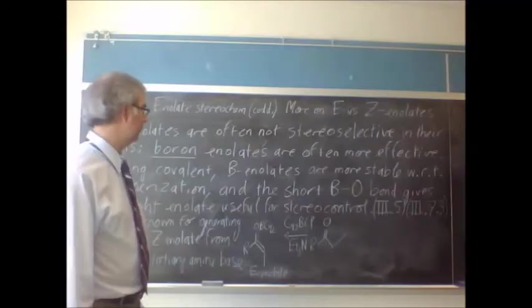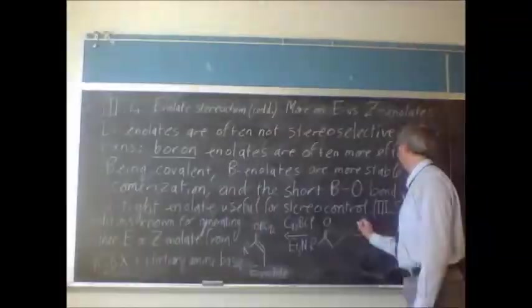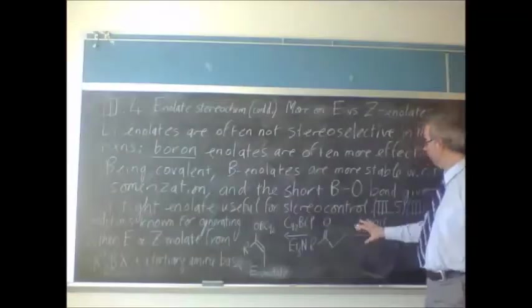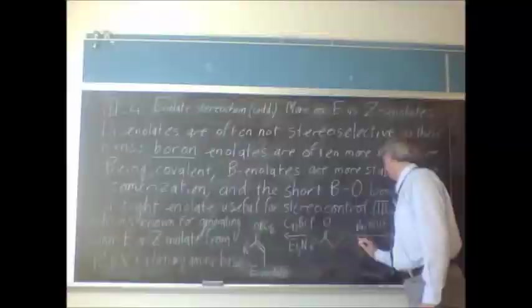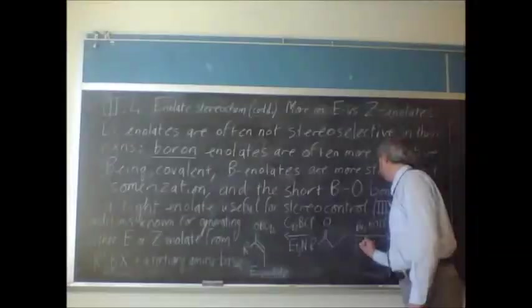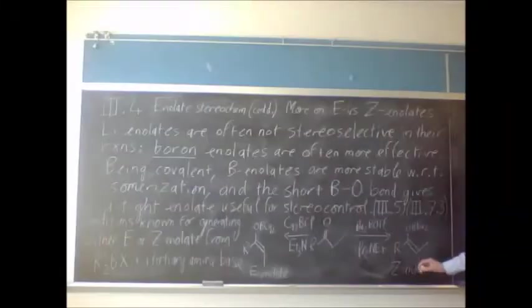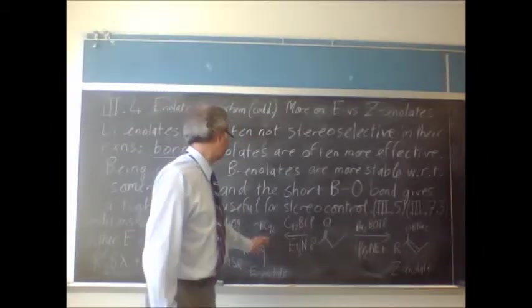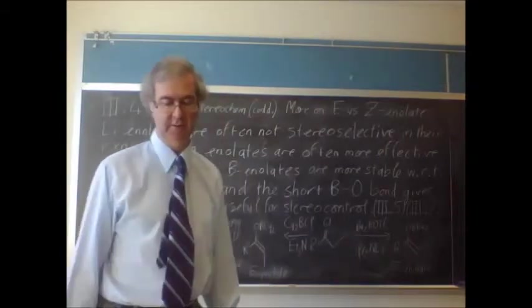But if we use a smaller R group on the boron, or at least a less crowded one, and use a triflate, and a more hindered base, now we can get the Z enolate formed into here, and this is quite selective, I think the selectivity is over 90% for both these sections.